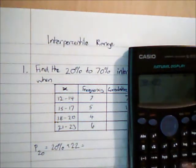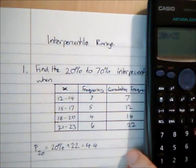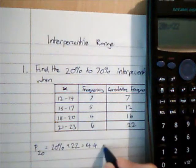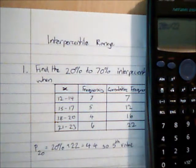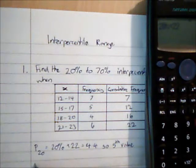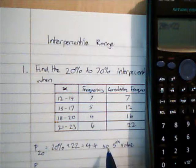Which gives me 4.4, and I am going to round up to the nearest whole number. So 4.4 means I am going to take the 5th value. Note here that even though we have 4.4, we still round up. We always round up in this case.